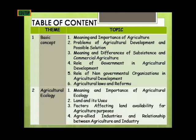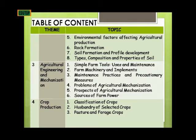The second theme is Agricultural Ecology. The first topic is the meaning and importance of agricultural ecology. The second is land and its uses. The third topic is factors affecting land availability for agricultural purposes. The fourth topic is agro-allied industries and the relationship between agriculture and industry. The fifth topic is the environmental factors affecting agricultural production.